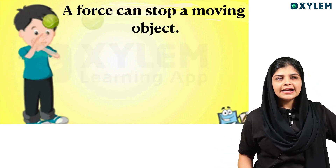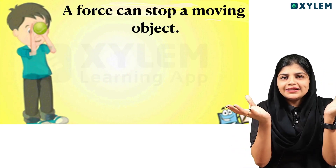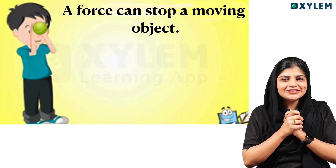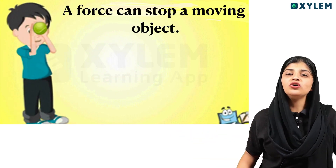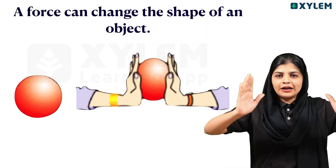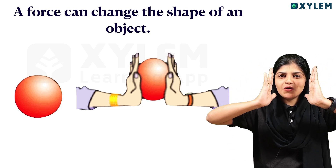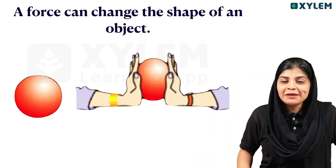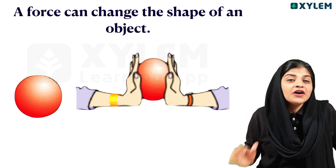A force can stop a moving object. If a force is applied to a moving object, it can bring it to rest. Also, a force can change the shape of an object — for example, if you take a round balloon and press it, the shape of the balloon changes.